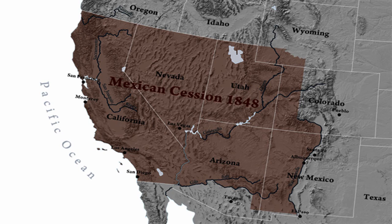Hello. For history number eight, I'm going to go over the Wilmot Proviso of 1848. This occurred right after the finish of the Mexican-American War in 1848, in which the United States gained new territories in the West, and how they will decide whether it's a slave state or a free state — basically stuff leading up to the Civil War.